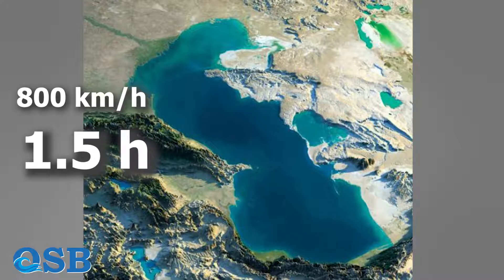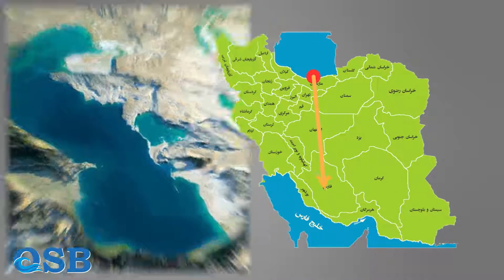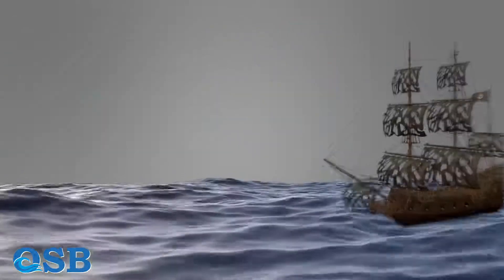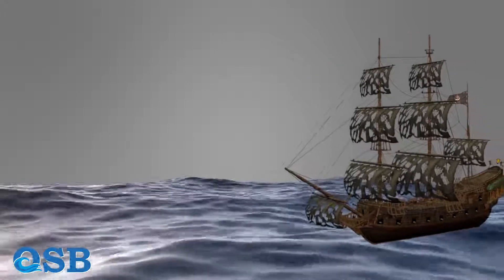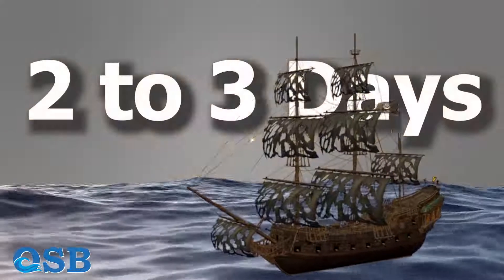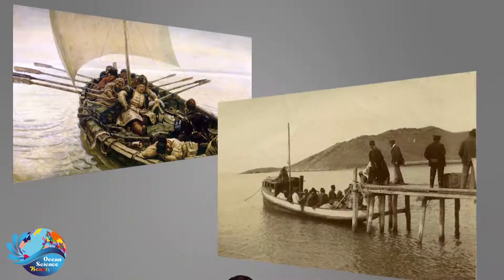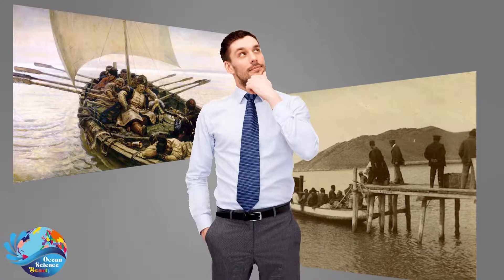This is a very long distance, at least for a lake — roughly the distance from the north of Iran to the south of Iran. With today's technology, traveling the length of the Caspian by cruise ship would take 2 to 3 days. The question arises: how did our ancestors cross this path? What do you think?